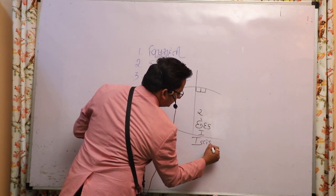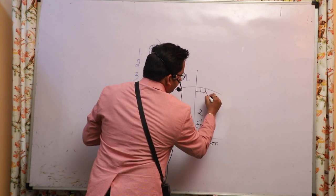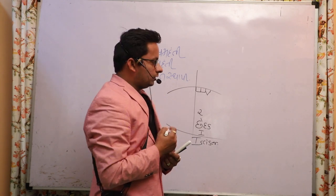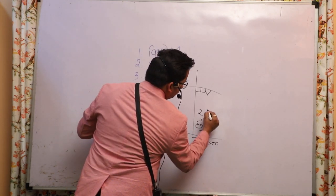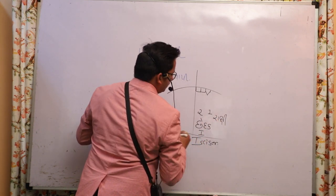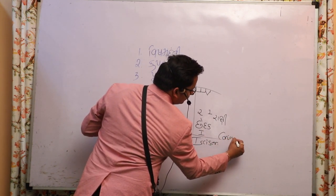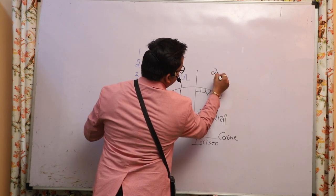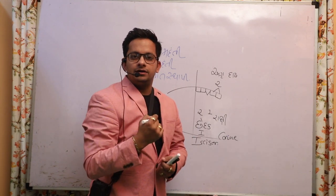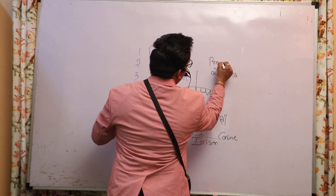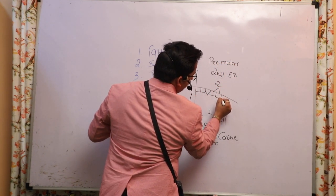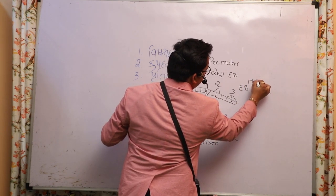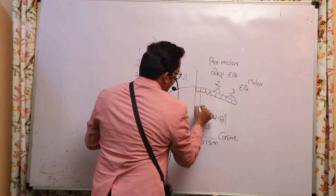The incisors are also called I-cisors. The second type of teeth are the rakshi dant (canine teeth). The third type are the agradad (premolars), which come before the molars. The fourth type - the molars (dad) - their count is three. So three is the number of molars.